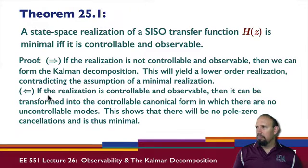On the other side, if the realization is controllable and observable, then it can be transformed into the controllable canonical form in which there are no uncontrollable modes. This shows that there will be no pole-zero cancellations, and thus it is minimal.